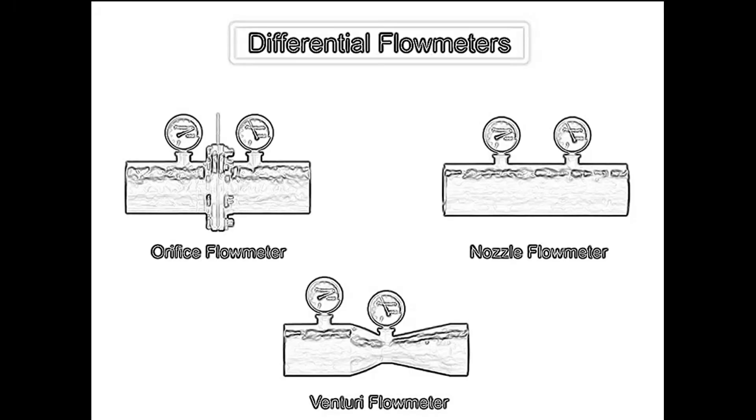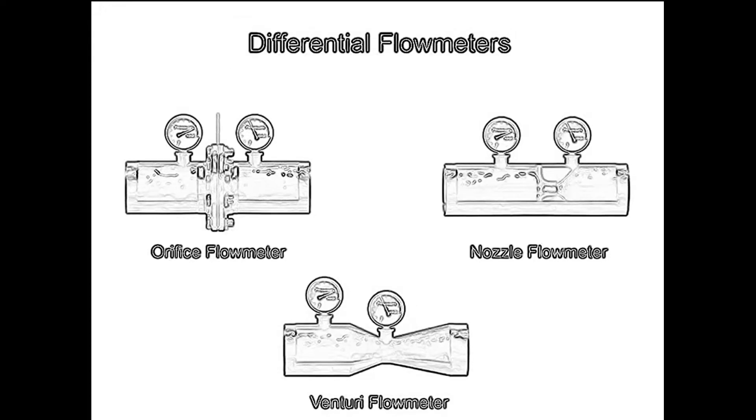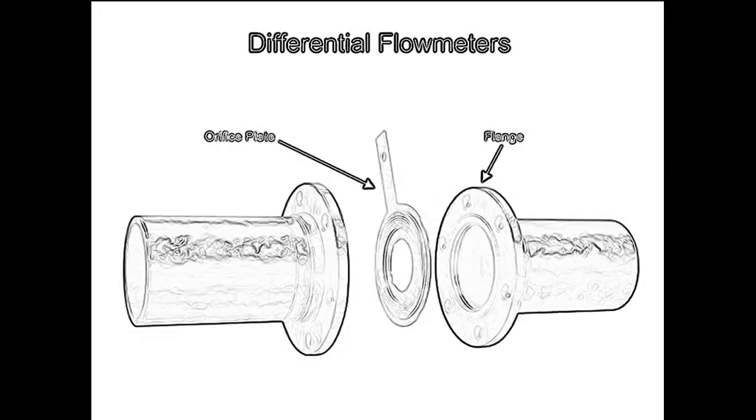The differential flowmeter is the most common device for measuring fluid flow through pipes, flow rates, and pressure differential. Flow rates and pressure differentials of fluids such as gases, vapors, and liquids are explored using the orifice plate flowmeter, a type of differential flowmeter.